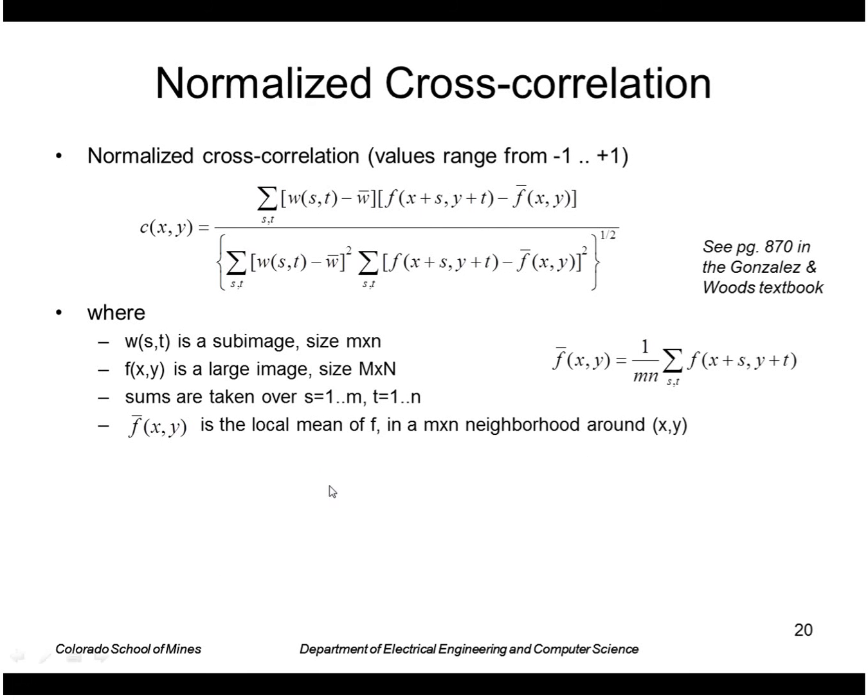Just some notes on this. The mask w is basically a fixed mask that we apply to the whole image. The image f is our large image. The mean f bar here is the local mean of f. It's the mean of f in the region of the neighborhood around the current position xy.